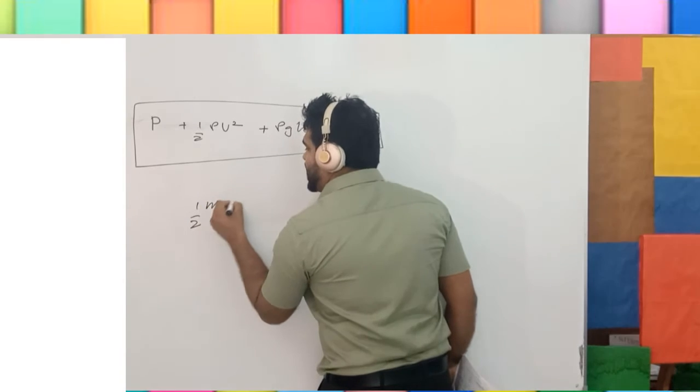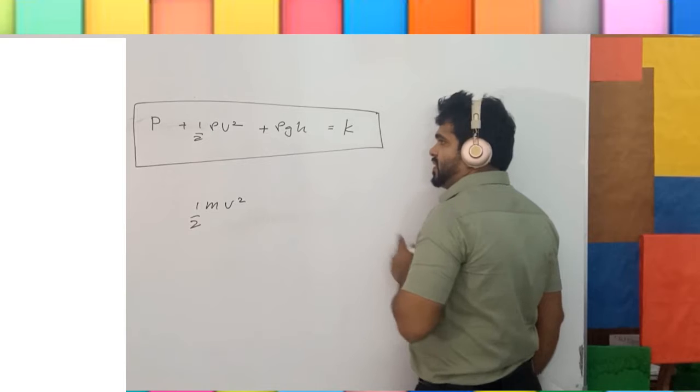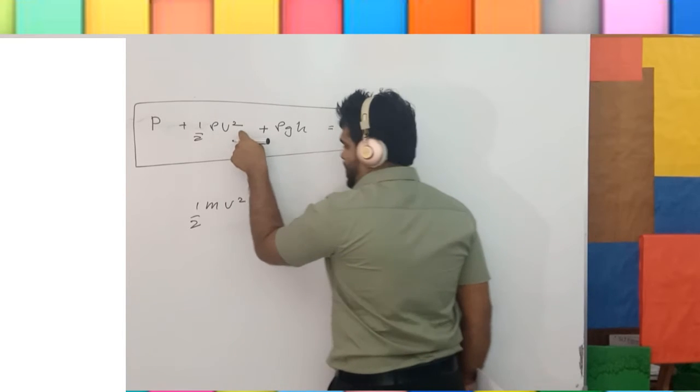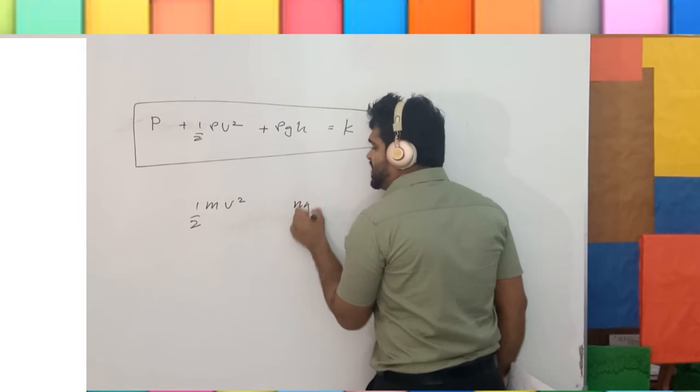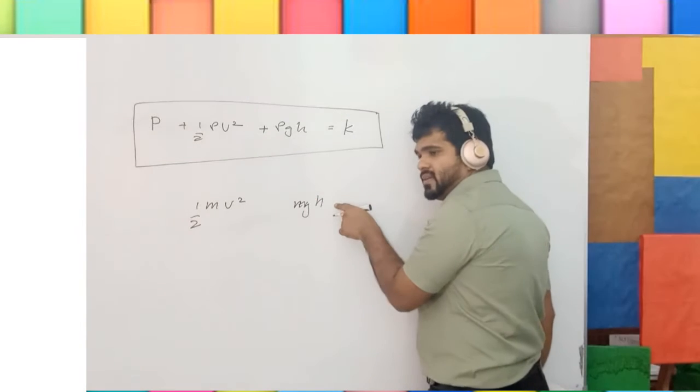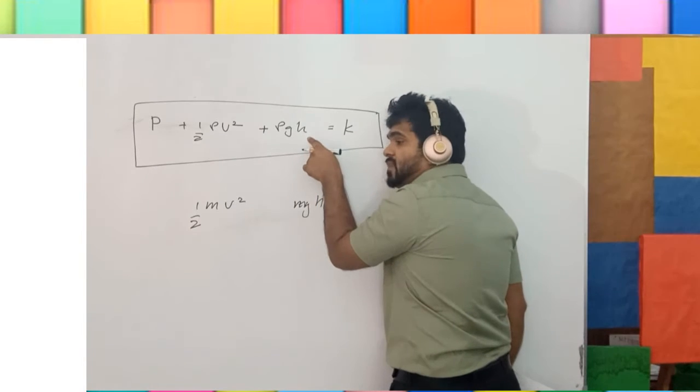Half mv square is the kinetic energy, but the kinetic energy per unit volume is half rho v square. mgh is the equation to find potential energy, but rho gh is the potential energy per unit volume.